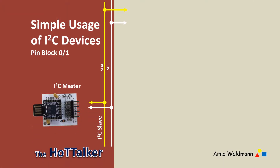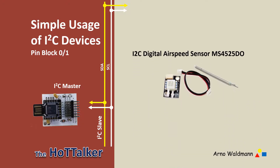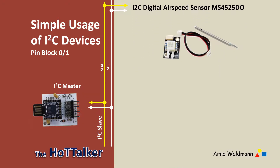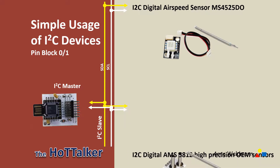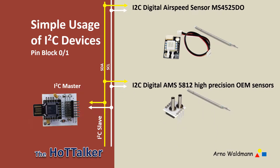Here I want to point out two special I2C airspeed sensors. The first one is the well-known MS4525DO and the other one is the high-precision AMS5812.